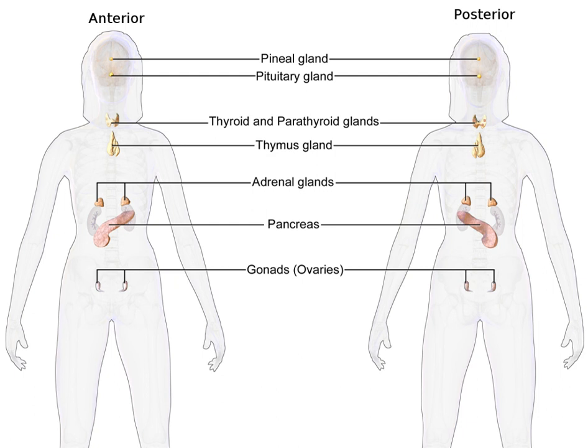Specializations include behavioral endocrinology and comparative endocrinology. The endocrine system consists of several glands, all in different parts of the body, that secrete hormones directly into the blood rather than into a duct system. Hormones have many different functions and modes of action; one hormone may have several effects on different target organs, and conversely, one target organ may be affected by more than one hormone.